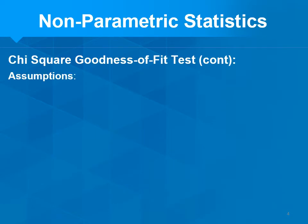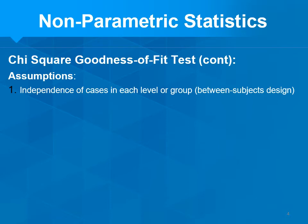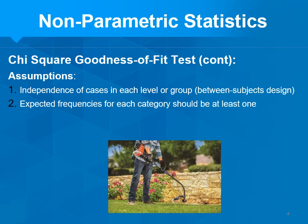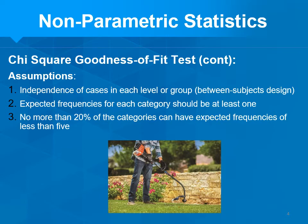The assumptions of chi-square goodness of fit: first, independence — each person is in your study only once. Second, the expected frequencies for each category must be at least one; otherwise, get rid of that category. Third, no more than 20% of the categories can have an expected frequency less than five. These are weird assumptions, but none have to do with normality or linearity.